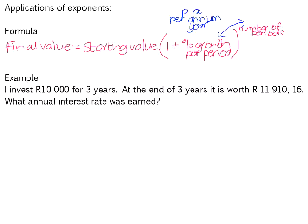If we look at an example. I invest 10,000 rand for three years. At the end of the three years, it is now worth 11,910 rand and 16 cents. What annual interest rate was earned?